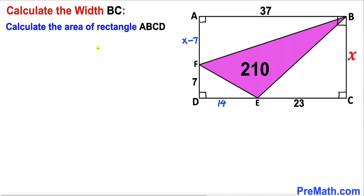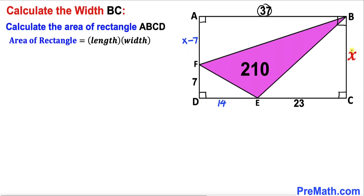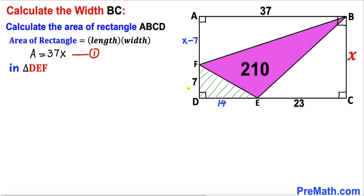Our first step is to calculate the area of rectangle ABCD. Recalling the area formula — area equals length times width — our length is 37 and our width is x, so the area of rectangle ABCD equals 37x. We'll call this Equation 1.